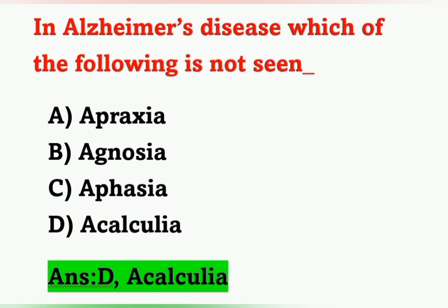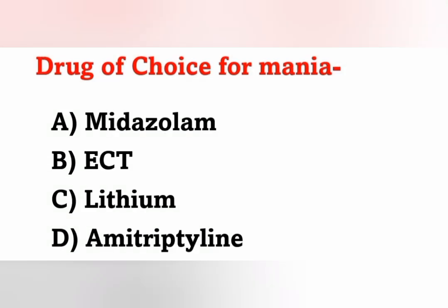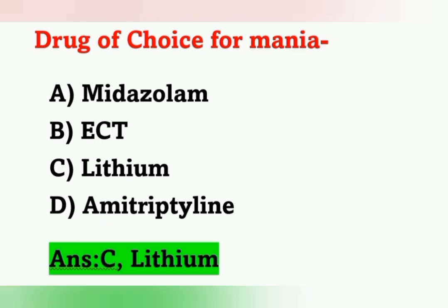Next question: Drug of choice for mania. Options: A) Metazolam, B) ECT, C) Lithium, D) Amitriptyline. Drug of choice for mania is lithium. Option C is the correct answer.